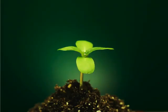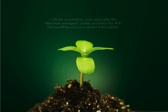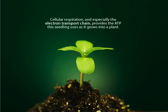For example, the cells of this seedling require much ATP to produce proteins and replicate DNA. Cellular respiration, and especially the electron transport chain, provides the ATP this seedling uses as it grows into a plant.